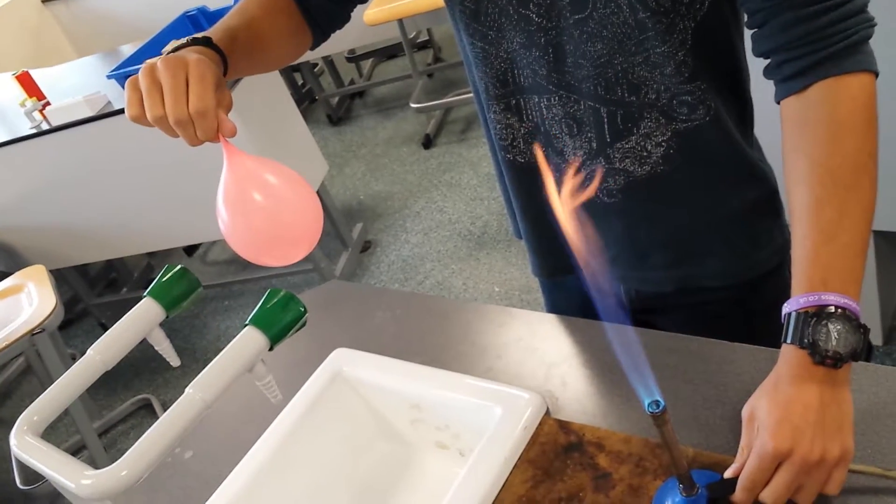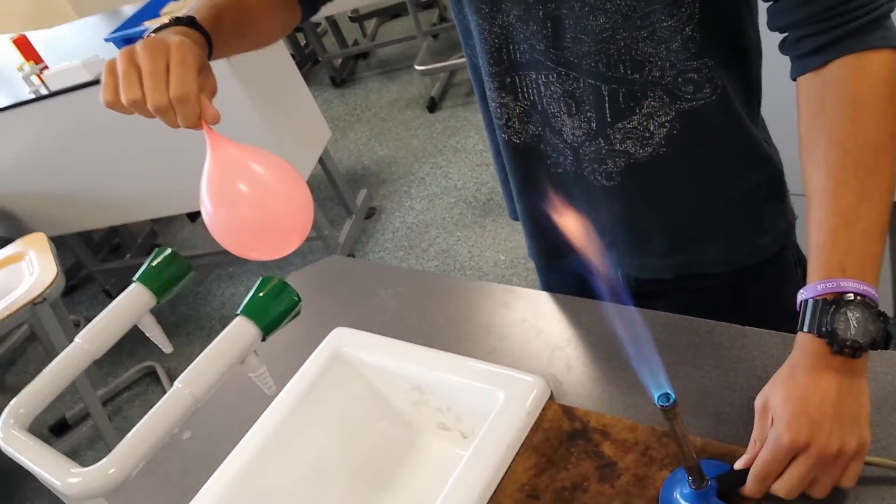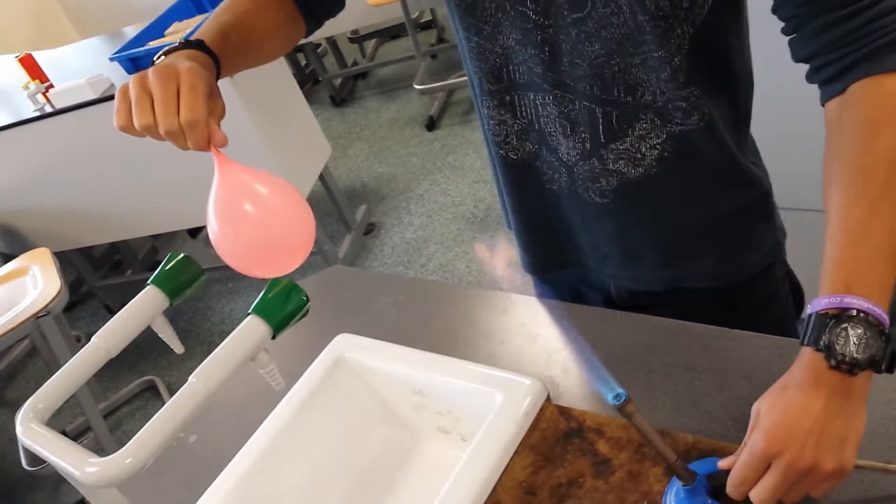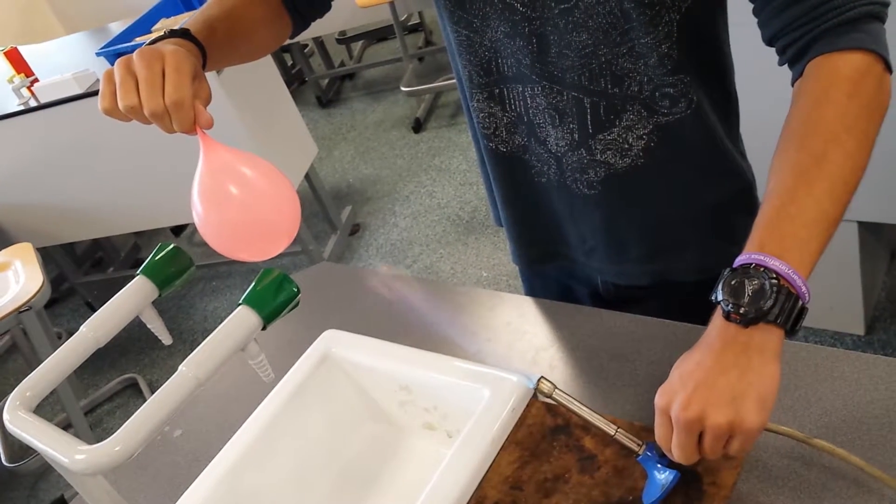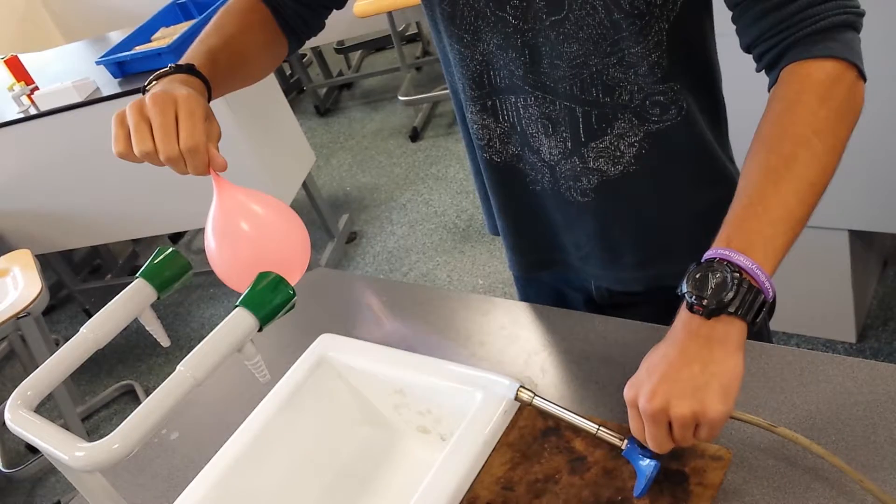We're looking at specific heat capacity and we're going to put that Bunsen burner onto that balloon. Let's see what happens. Off you go. Getting a bit closer with that flame. Oh, we're heating it.